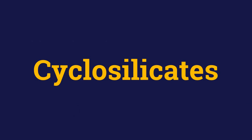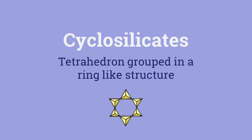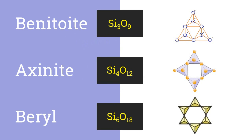Next we have cyclosilicates. Cyclosilicates are silica tetrahedrons that form a closed ring-like structure. Rings of 3, 4, and 6 tetrahedra are known. Tourmaline is the only common mineral which has independent 6-tetrahedron rings. Benitoite is a 3-tetrahedron ring. Axinite has 4 of them, and beryl has a 6-tetrahedron ring-like structure.